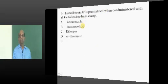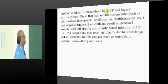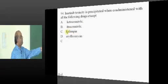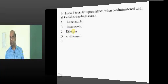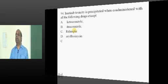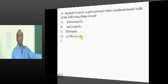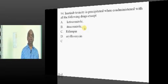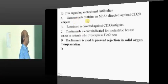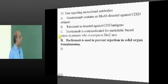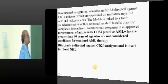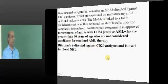Imatinib mesylate is typically metabolized by P450 system. If you give rifampicin, it will increase metabolism of imatinib, whereas itraconazole, ketoconazole, erythromycin - they are all inhibitors and increase the toxicity of imatinib mesylate. Daclizumab is typically used to prevent the rejection in solid organ transplantation.